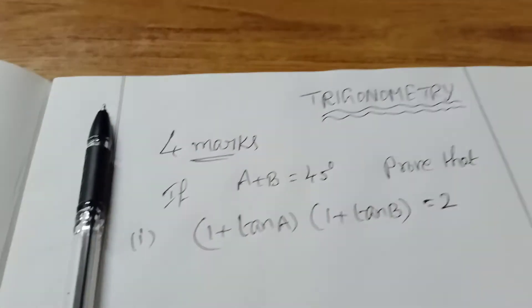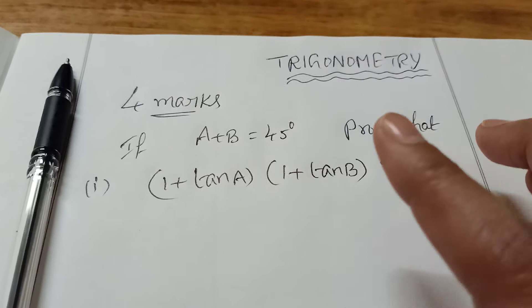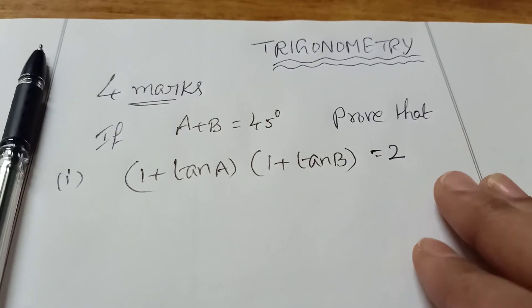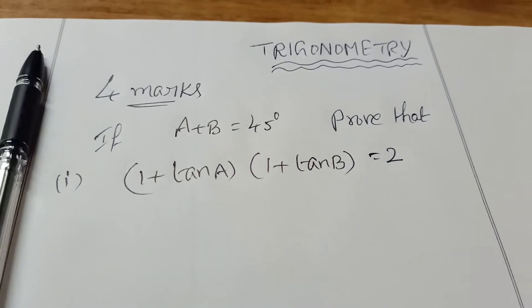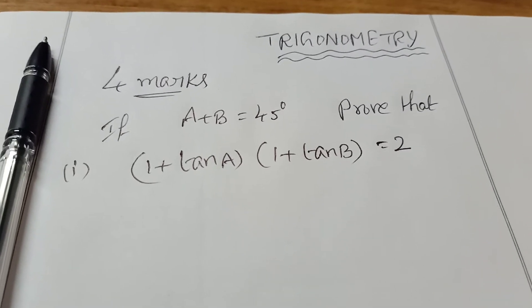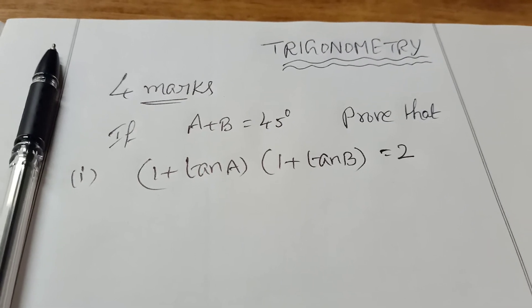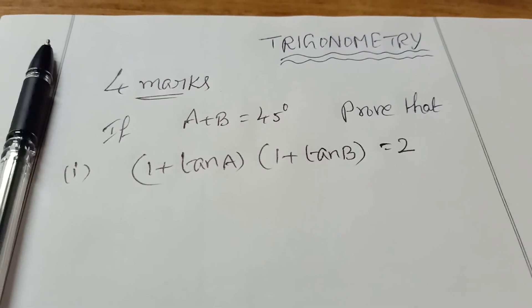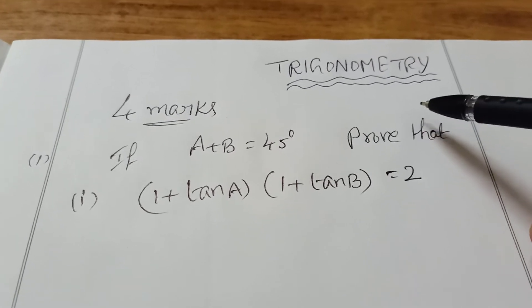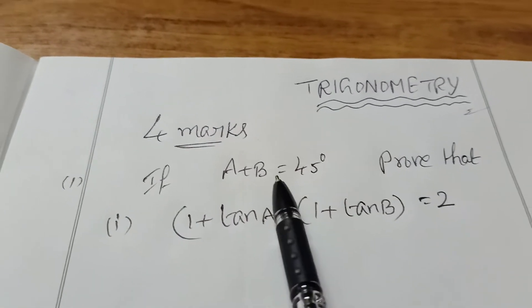Hi students, first year juniors — today I am explaining trigonometry. This is a very important topic. Trigonometry is worth 97 marks total, and out of that, 57 marks will be trigonometry only. That much weight is there.